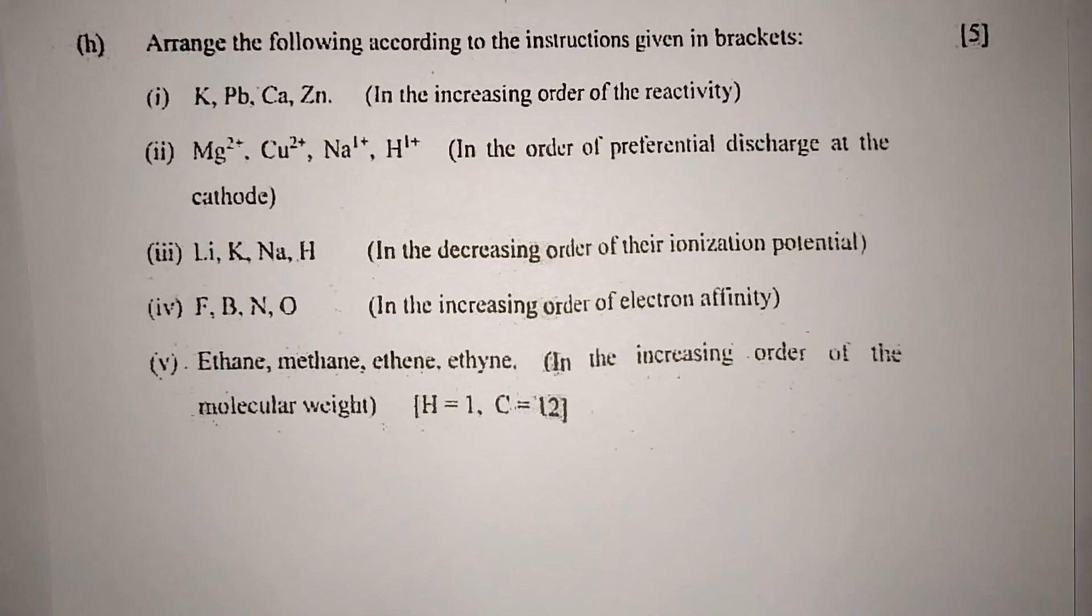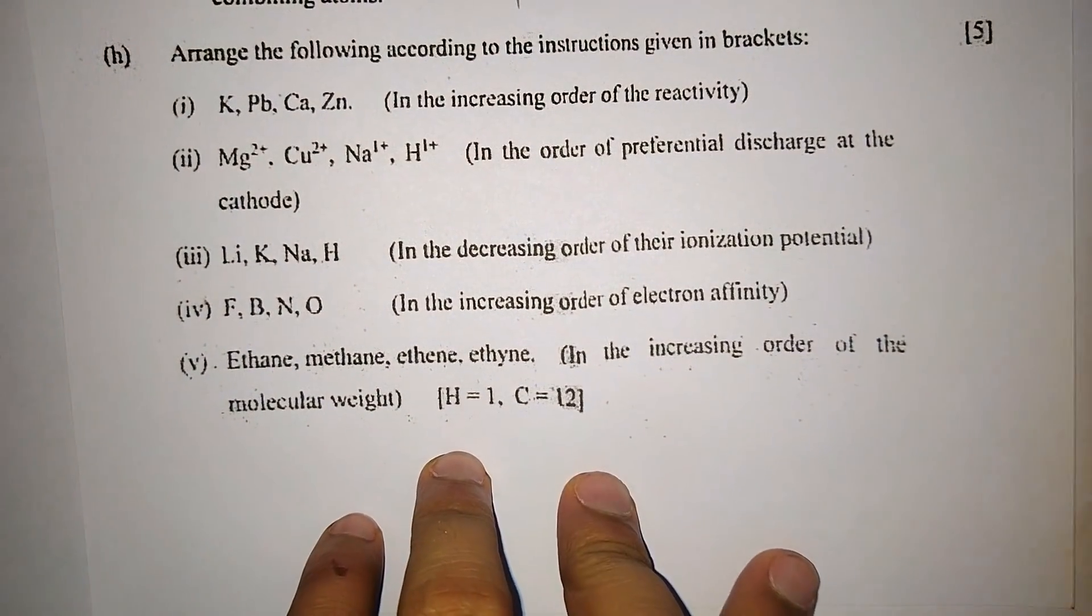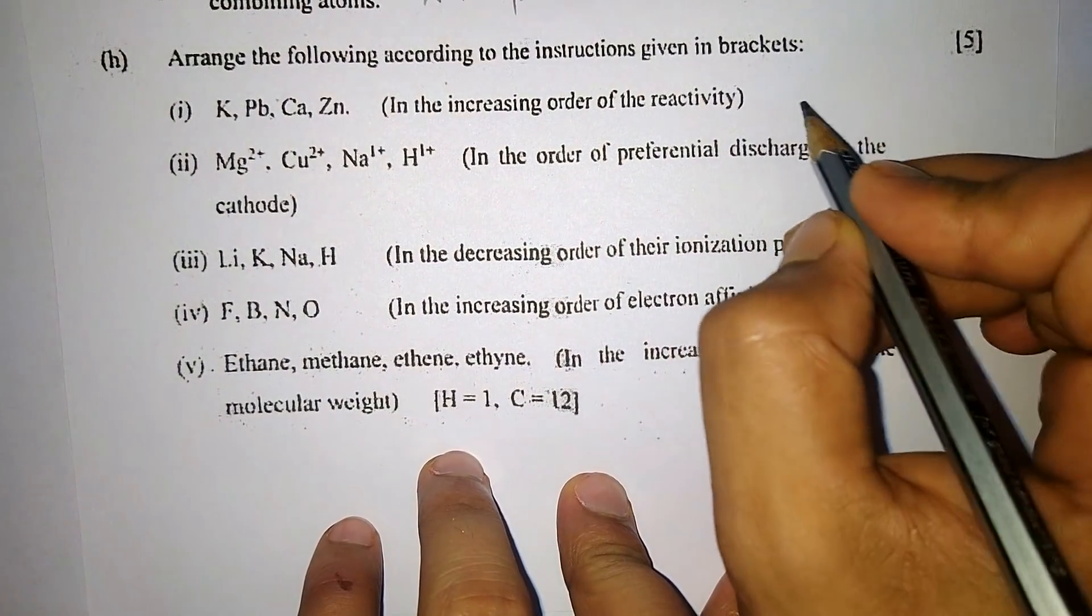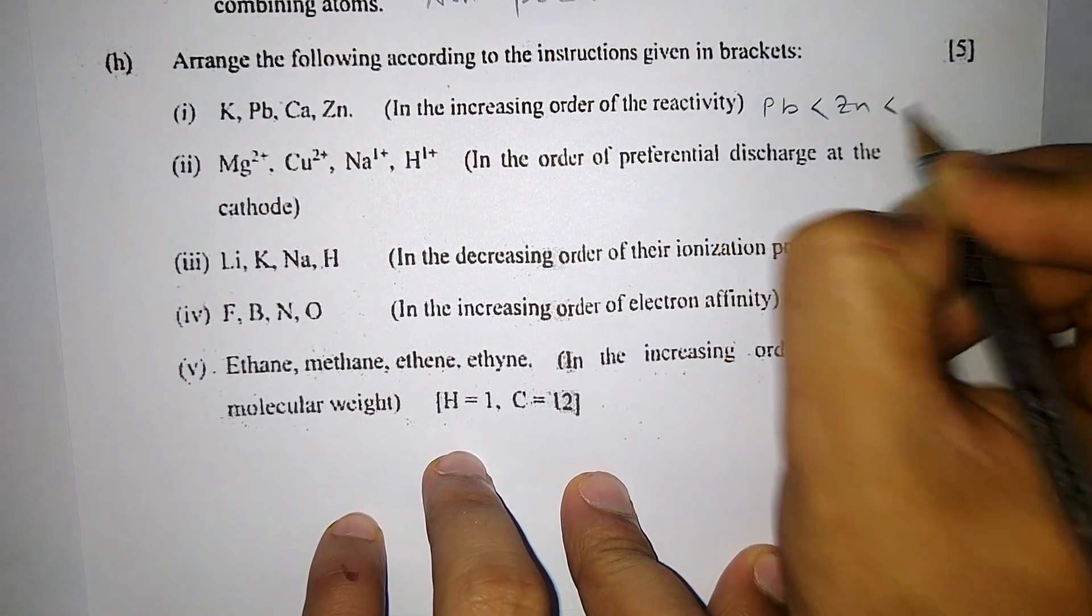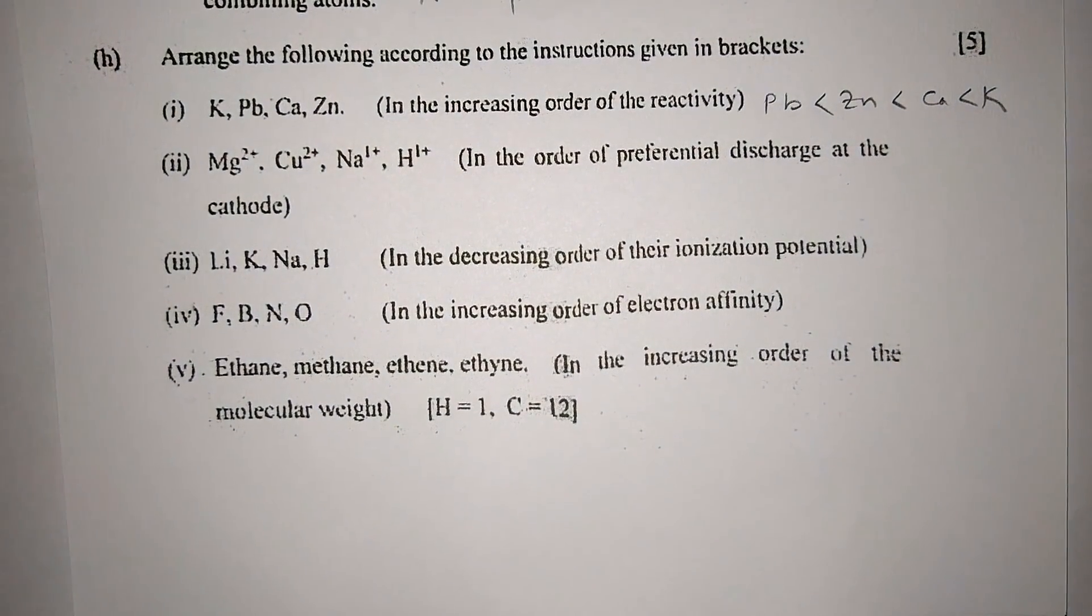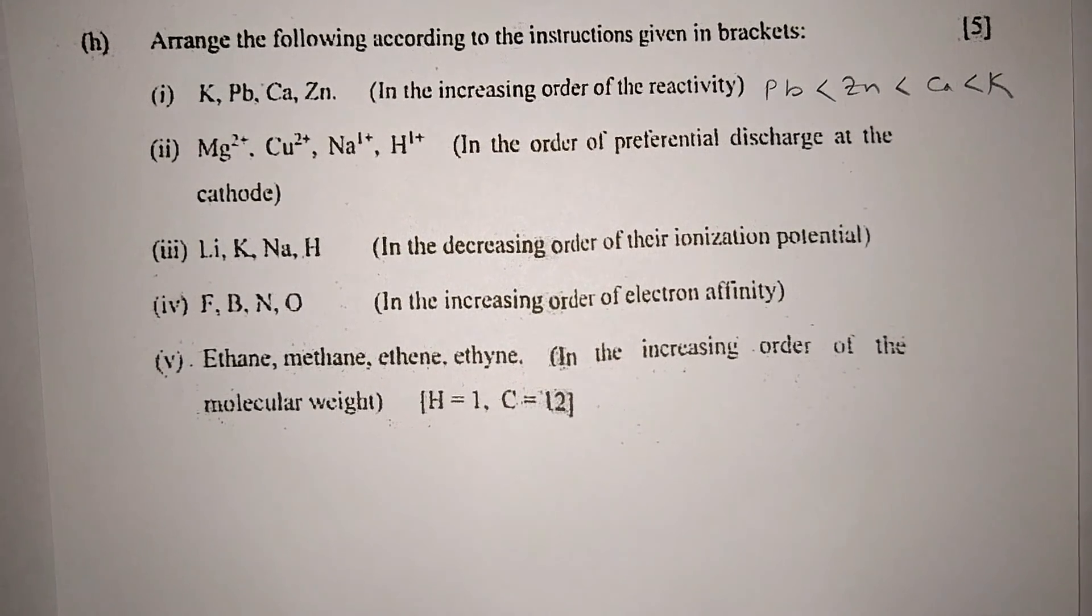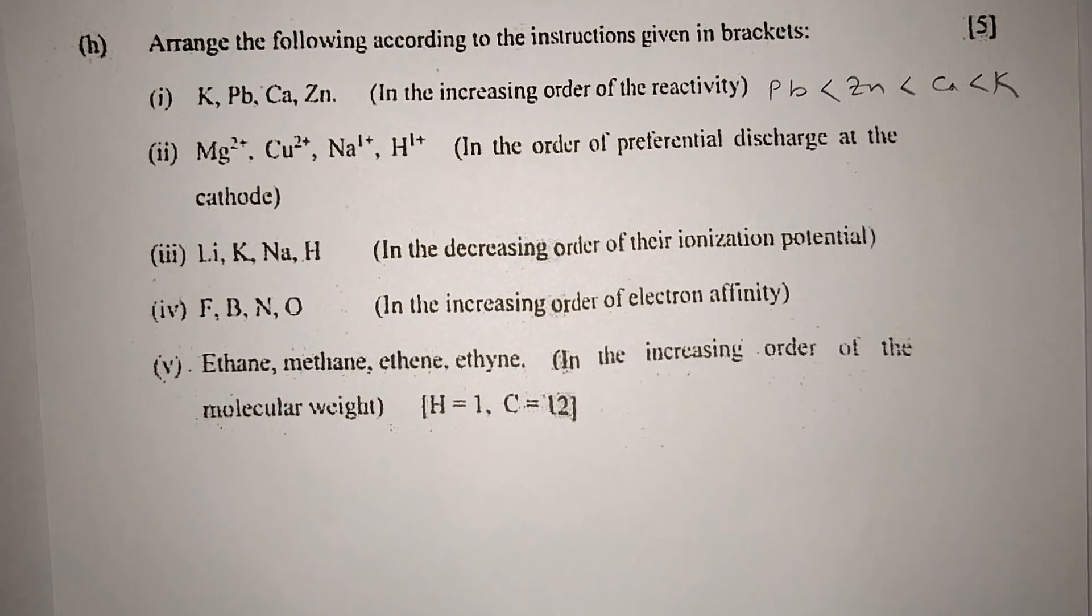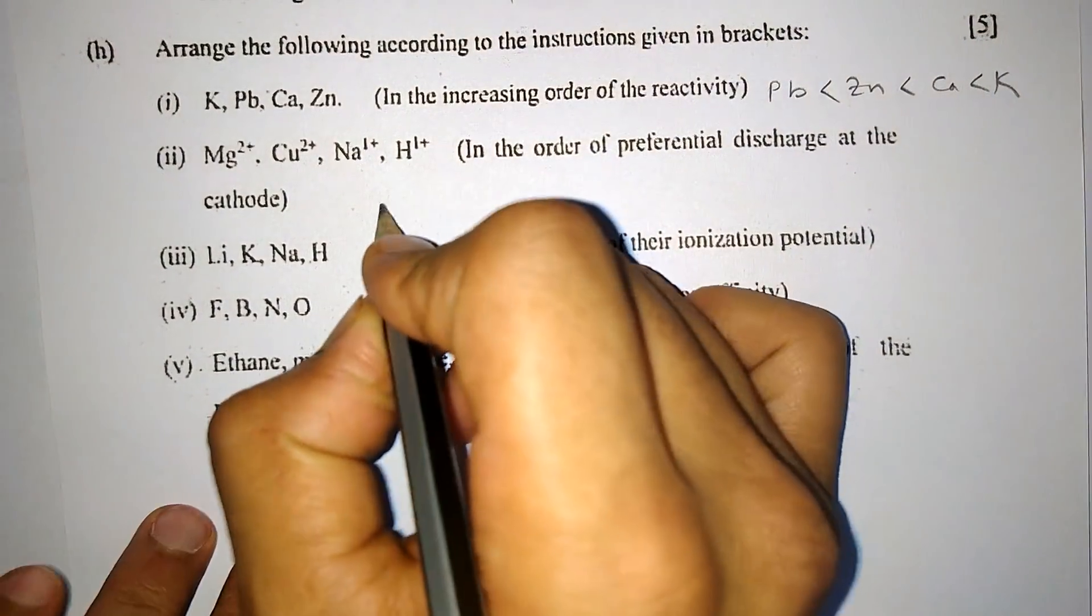Part H: Arrange the following according to the instructions given in brackets. Number one: K, Pb, Ca, Zn in the increasing order of reactivity. By metal reactivity series we have lead, then zinc, then calcium, and finally potassium as the most reactive.